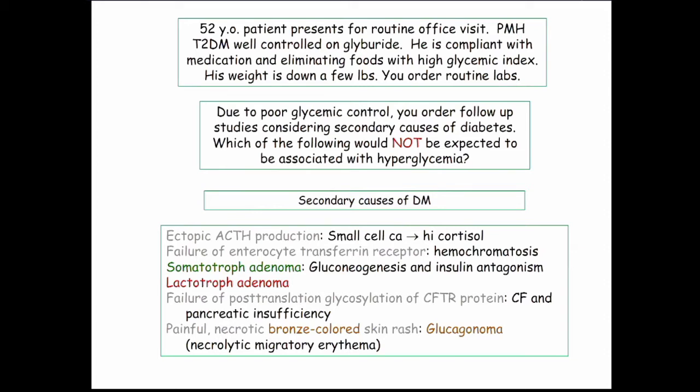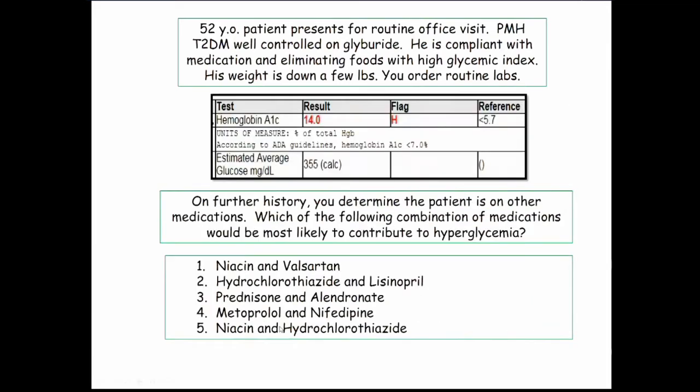A painful, necrotic, bronze-colored skin rash — that's the glucagonoma, which also causes hyperglycemia. So with this poorly controlled diabetic, there is a differential of other things causing diabetes to go out of control. Lactotroph doesn't do it — that's the answer.